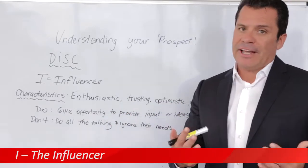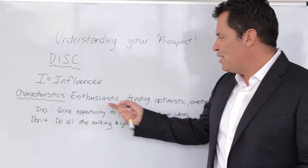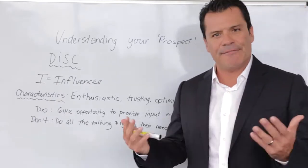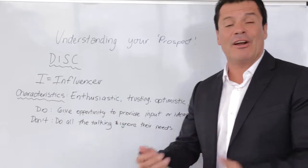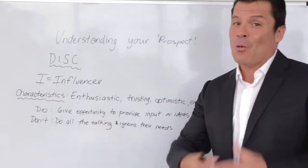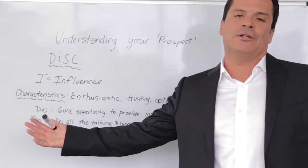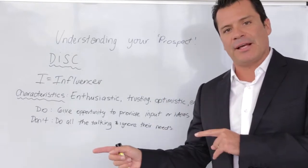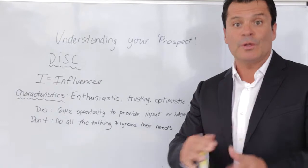The I personality is the Influencer. A couple of general characteristics you need to know about this sort of person: enthusiastic, trusting, optimistic, emotional, and persuasive. Does that sound familiar? Most influencers are actually salespeople — we're persuasive, emotional, talkative, enthusiastic, trusting, and optimistic.